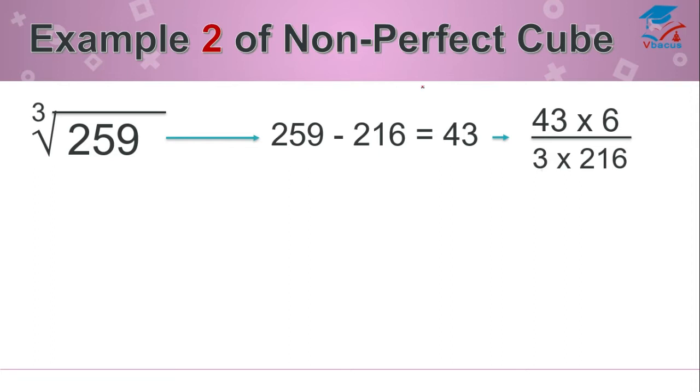And it should be divided by 3 times 216, that is cube of 6. Let us bring it to the lowest term. So 3 ones are 3, 3 twos are 6, 2 ones are 2, 2 ones are 2, 2 eights are 16. So you have to divide now 43 by 108. So if you divide 43 by 108, it will become 0.379 and add it to 6.